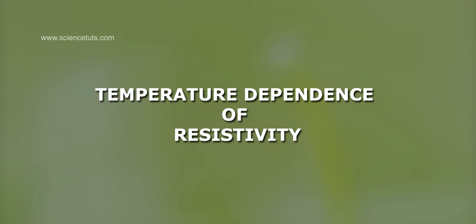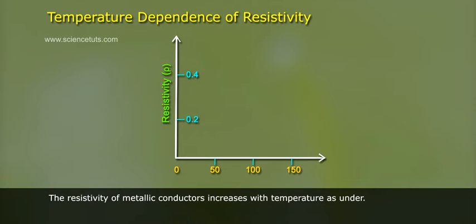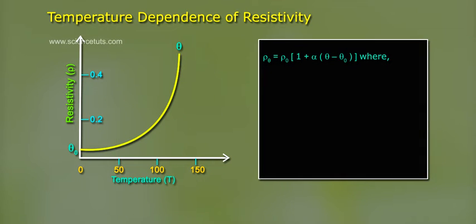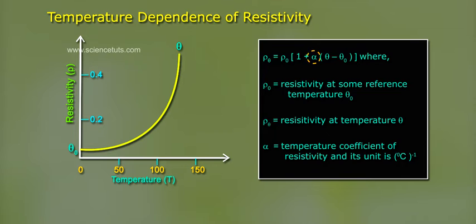Temperature dependence of resistivity. The resistivity of metallic conductors increases with temperature as ρ(θ) = ρ₀[1 + α(θ - θ₀)], where ρ₀ equals resistivity at some reference temperature θ₀, ρ(θ) equals resistivity at temperature θ, and α stands for temperature coefficient of resistivity with unit degree centigrade inverse.